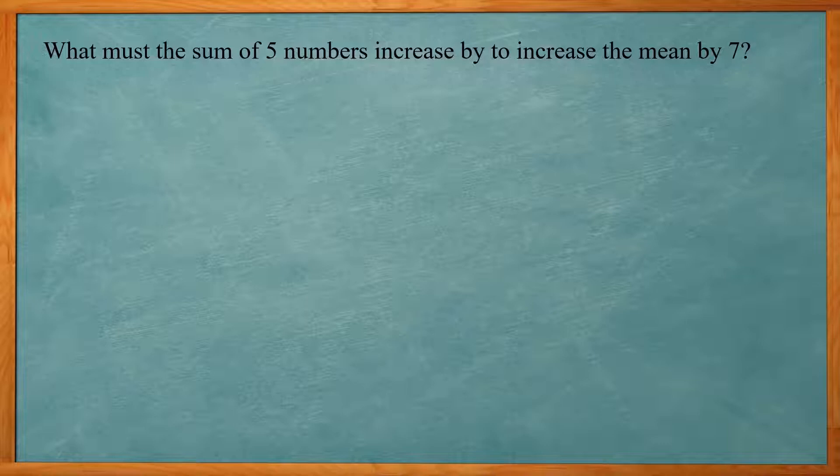So this problem says, what must the sum of 5 numbers increase by to increase the mean by 7? So this is not as straightforward. But we're still using our equation or formula to find the mean. We still have the sum divided by count equal to the mean. So here we don't know what those 5 numbers are. So we could just make up 5 numbers and find the mean of that. And keep increasing our sum to figure out how much we need to increase the sum by to increase the mean by 7.